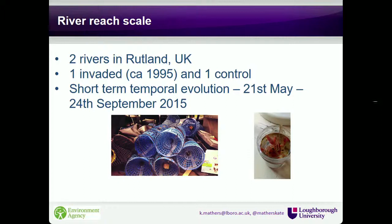The methods used were at a reach scale, looking at two rivers in Rutland, UK. One river was invaded around 1995 and had a well-established population by the time of sampling; the second was a control river without any crayfish. The study focused on short-term temporal evolution of effects, based around the crayfish season — sampling started 21st May before the crayfish became active, and finished around 24th September at the end of the season. Crayfish activity is strongly correlated with water temperatures, being mainly active during summer.